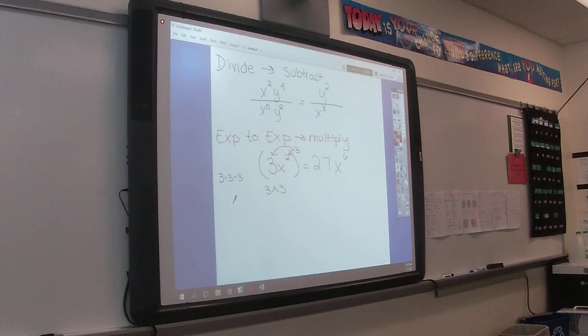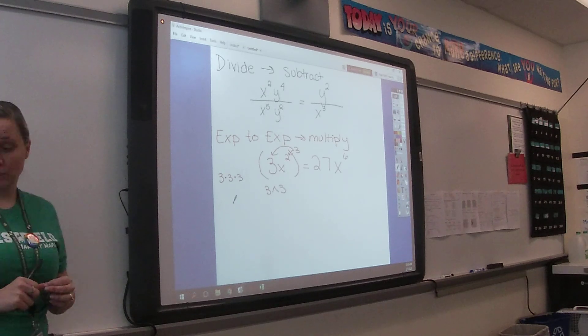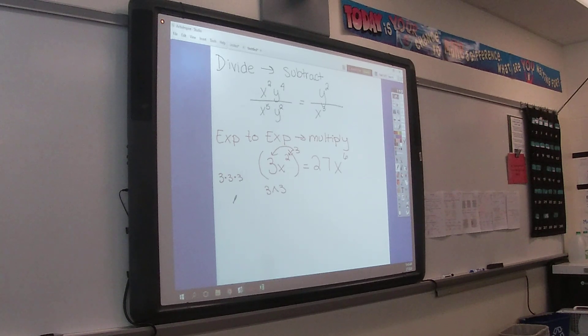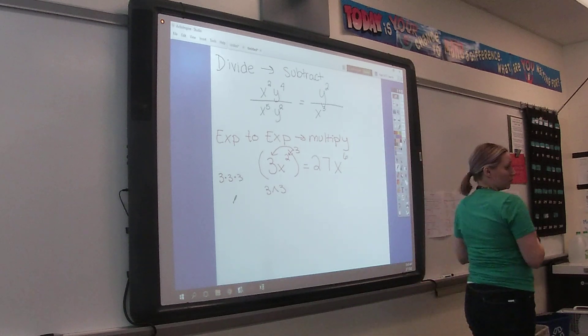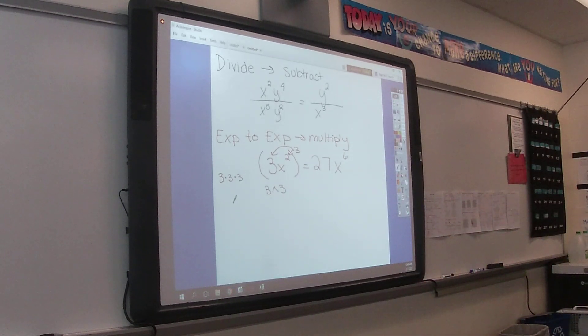What does a negative exponent tell us to do? Move it to the other side. So if it was in the top, it goes to the bottom. What is anything to the zero power? 1. Anything to the zero power is 1. A negative exponent says to move it to the other side.